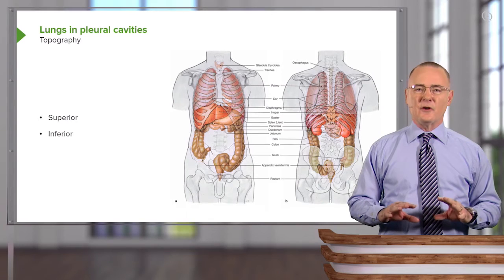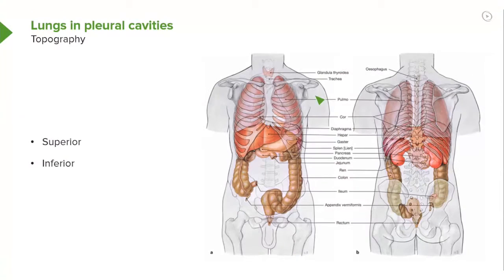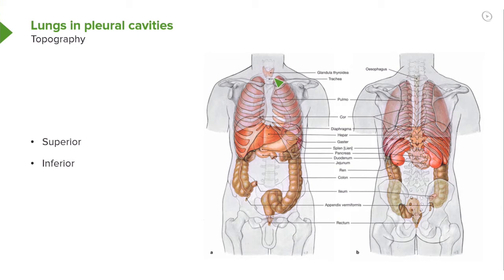First, let's start with the superior limit of the lung. We see the apex of the right lung projecting above the clavicle. We also see the apex of the left lung projecting above the left clavicle. If we take a posterior view of the apices of the lungs, they'll have a vertebral level relative to C7, the vertebra prominens. The distance above the clavicle is about 2.5 centimeters,